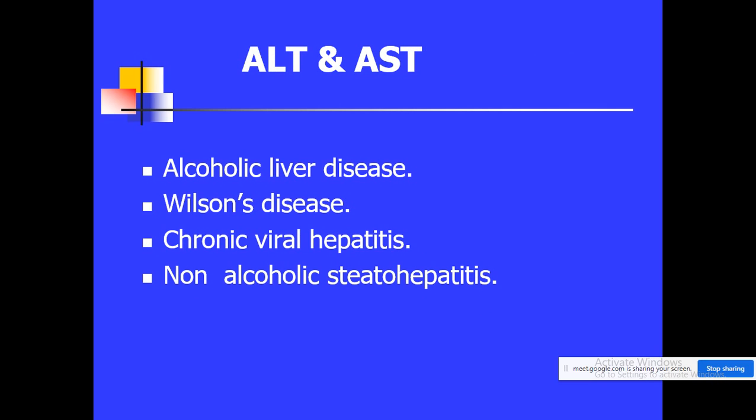Both ALT (alanine transaminase) and AST (aspartate transaminase) are important for estimating hepatocellular damage. These two enzymes are increased in cases of alcoholic liver disease, Wilson's disease, hepatitis, chronic viral hepatitis, and non-alcoholic steatohepatitis.